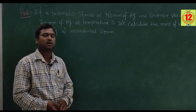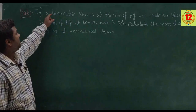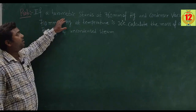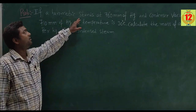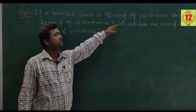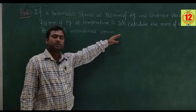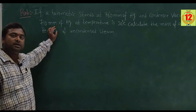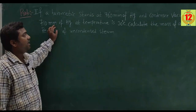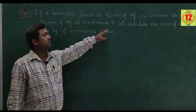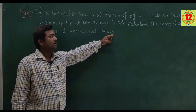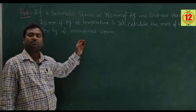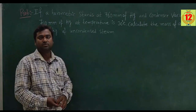Let us take one problem. The problem states that if a barometric pressure stands at 760 mm of Hg and condenser vacuum is 710 mm of Hg at a temperature of 30 degree centigrade. Calculate the mass of air per kg of condenser steam.